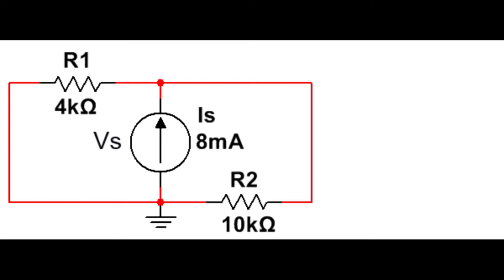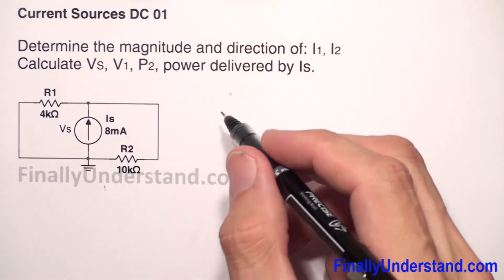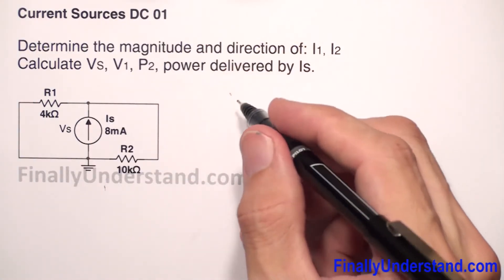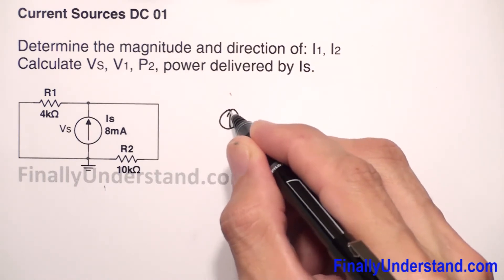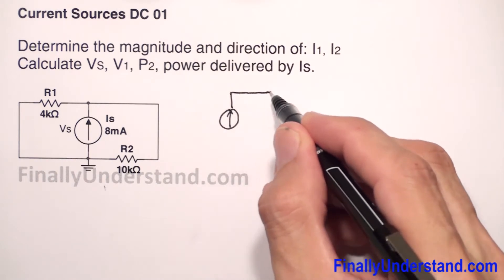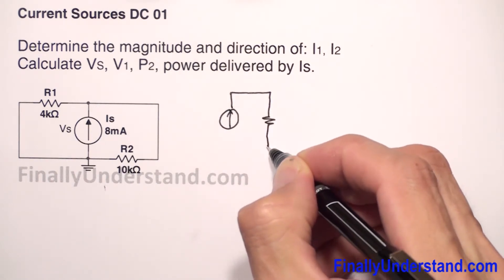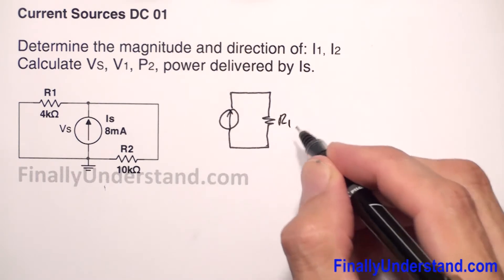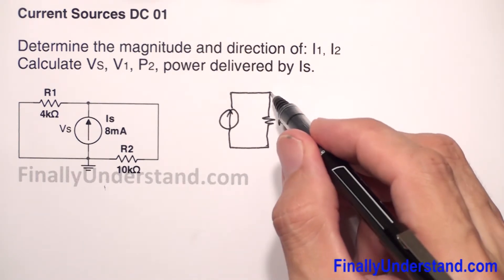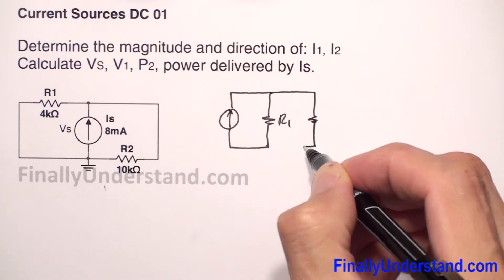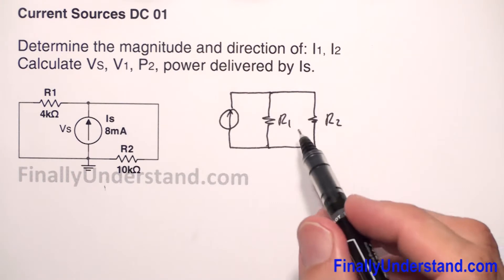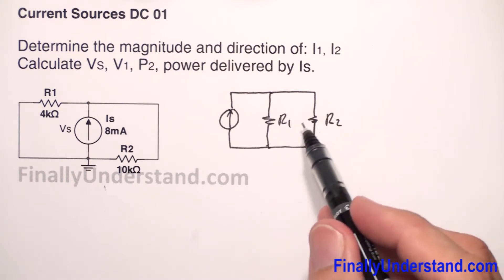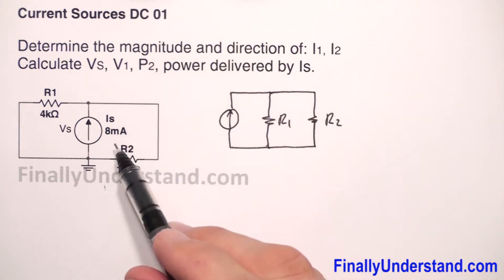Let's take a look at this example. I would start solving this problem by redrawing the circle. So I can redraw this circle like this. I have my current source and I have my resistor R1, I have my resistor R2. So I obtain basically the circuit which is looking, in my opinion, a little bit easier than this one.